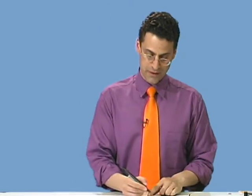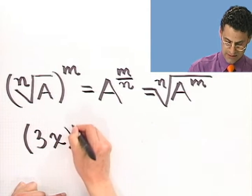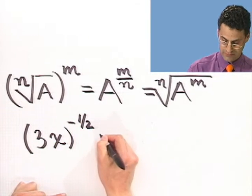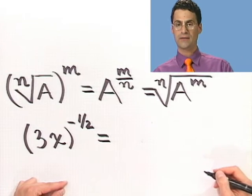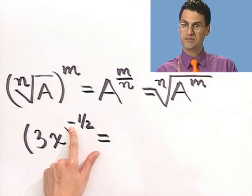Let me show you now another quick example. Let's try to simplify this. Let's take 3x to the minus 1 half power. How can I rewrite that? Well, there's a couple things going on here. There's a fraction, but there's also a negative sign.